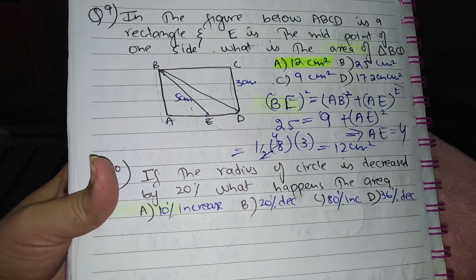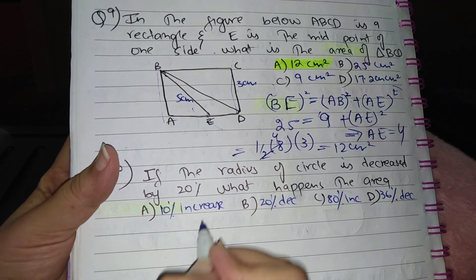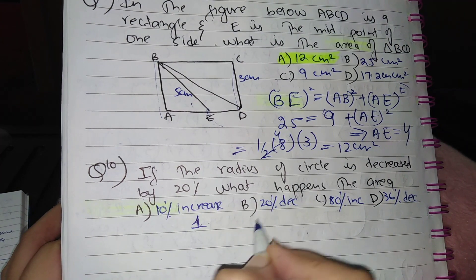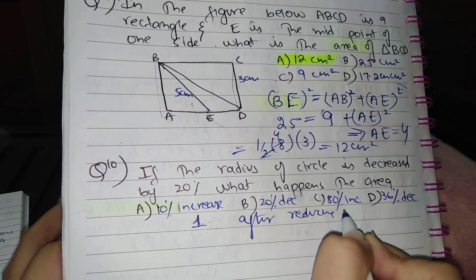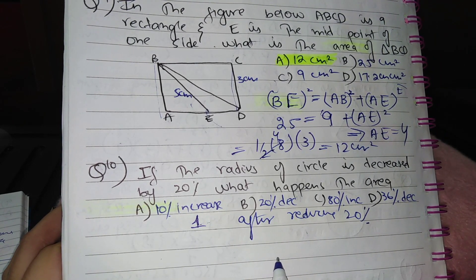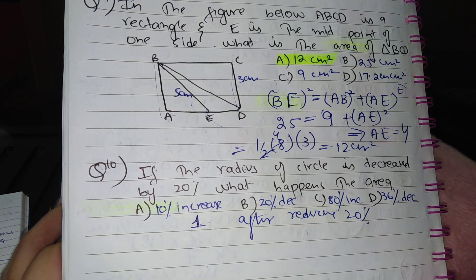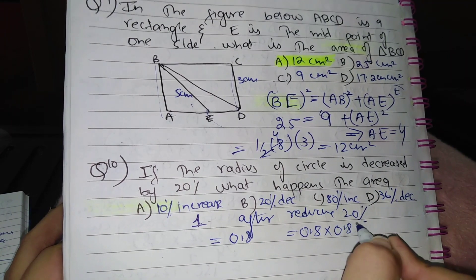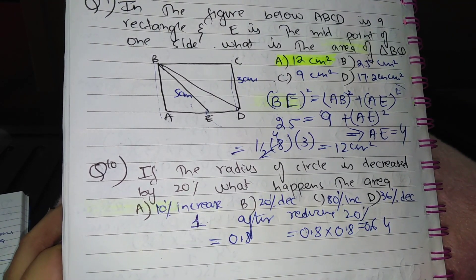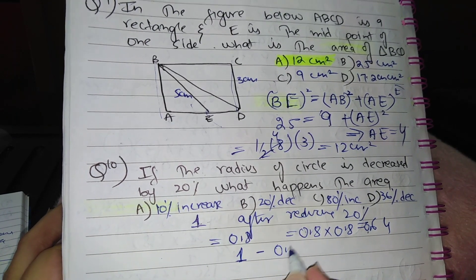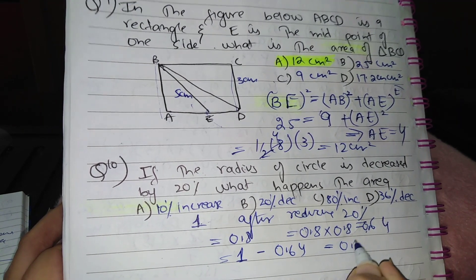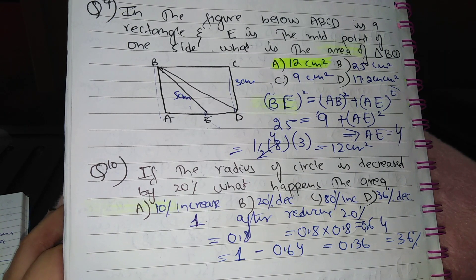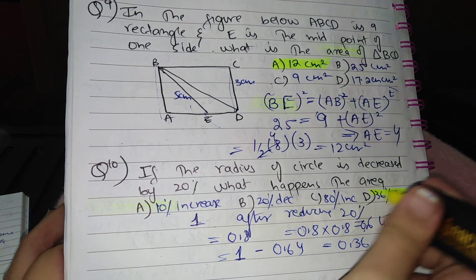Question 10: If the radius of a circle is decreased by 20%, what happens to the area? Let initial radius = 1. After 20% decrease, new radius = 0.8. New area = π(0.8)² = 0.64π. Original area = π(1)² = π. Decrease in area = 1 − 0.64 = 0.36, which is 36%. So if the radius is decreased by 20%, the area decreases by 36%. Option D is correct.